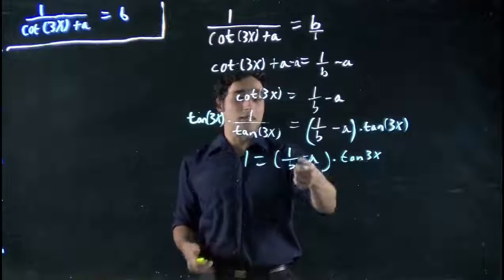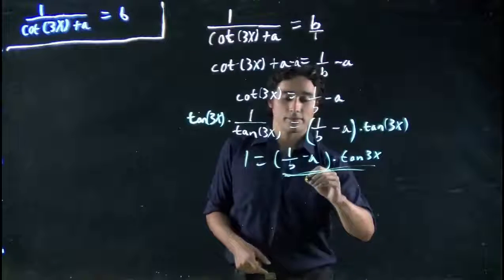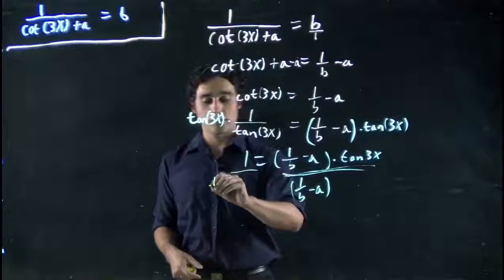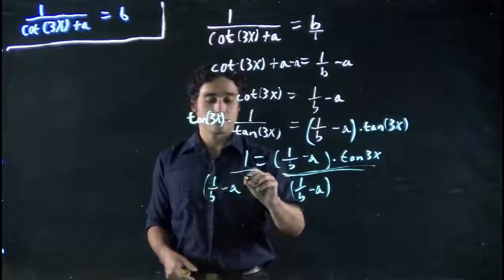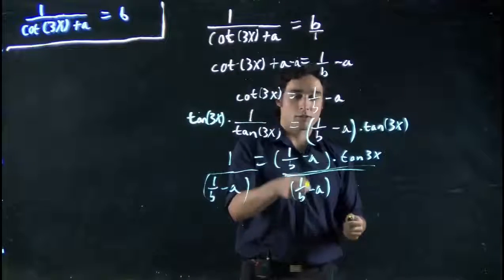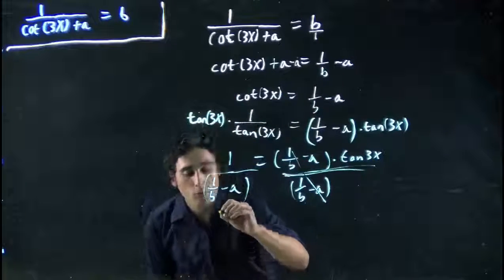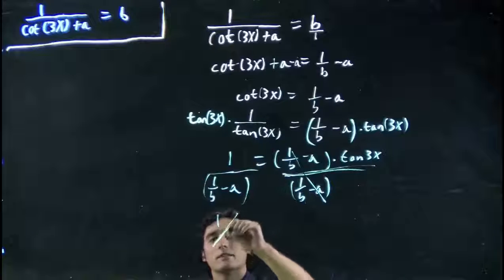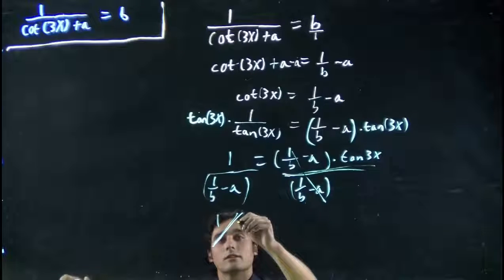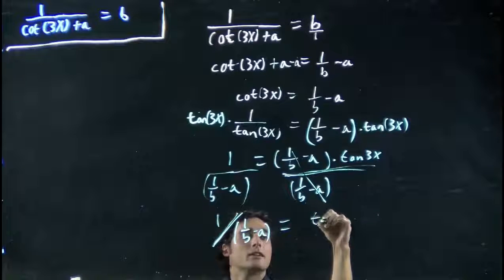Well, I don't want that with this other term, so I'm actually going to now divide 1 by this entire term. Divide both sides by this term in brackets, 1 over b minus a. Both sides get that treatment. These will cancel, and we're left with 1 divided by this whole term, 1 over b minus a, and that's all equal to tan of 3x.